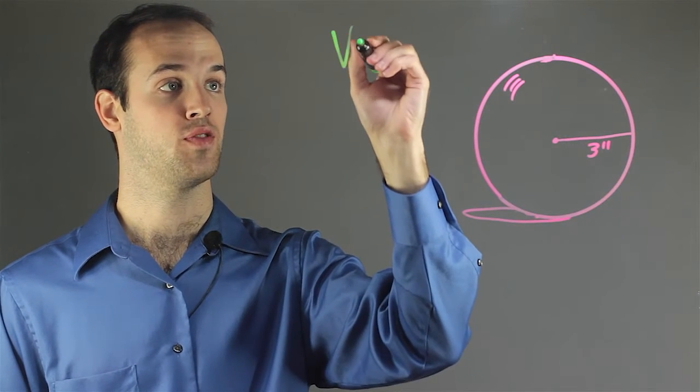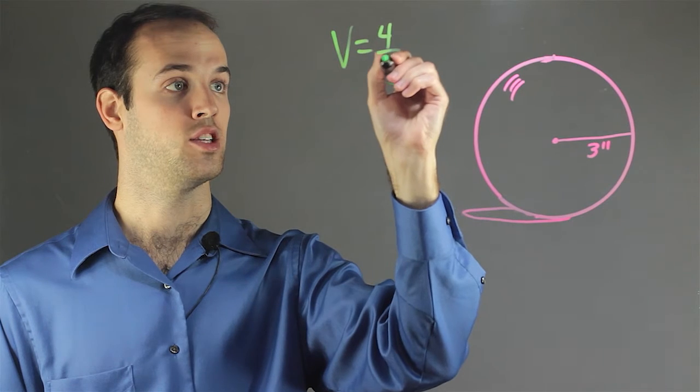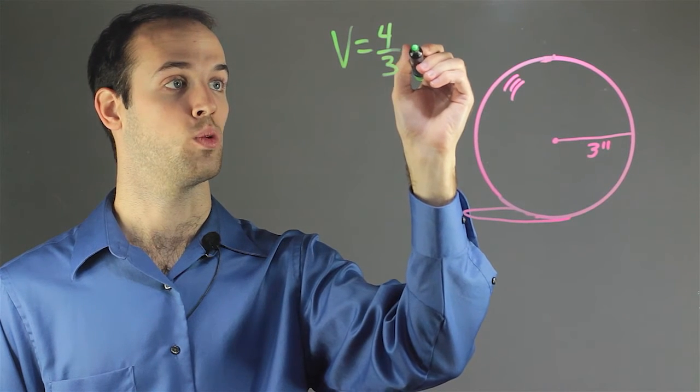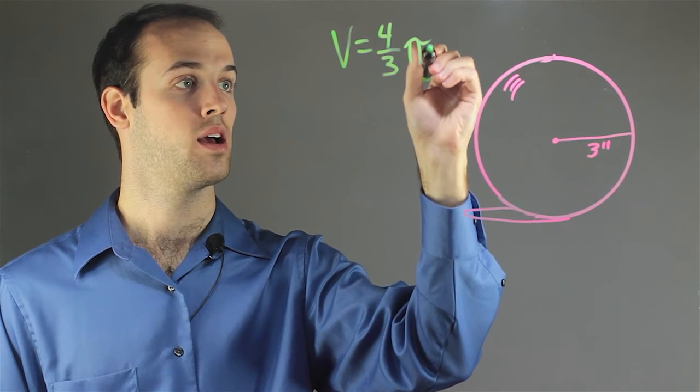Well, I know that the volume of a sphere is generated by this formula: v equals 4 thirds pi r cubed.